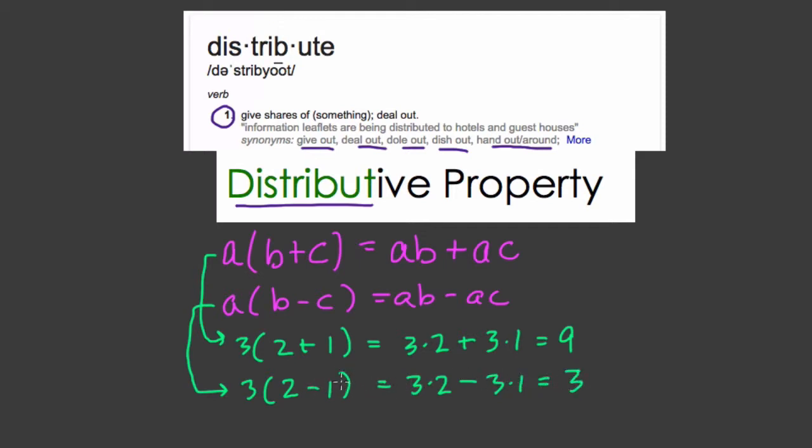Now, you might be saying with numbers, why bother using the distributive property? Well, there are certain cases where it's extremely efficient to use the distributive property. But imagine how important it is in algebra. Because unlike with numbers, with algebra, we can't always add the terms we're given.